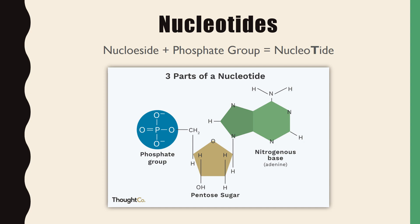Adding a phosphate group to a nucleoside forms a nucleotide. To remember this, note that 'nucleotide' has a T, which can stand for trio or three — a trio of building blocks: a nitrogenous base, a pentose sugar (those two together are the nucleoside), plus a phosphate group. Hydrogen bonds then form between nitrogenous bases, nucleotides join to make a nucleotide polymer, and all that comes together to form our double strand of DNA.